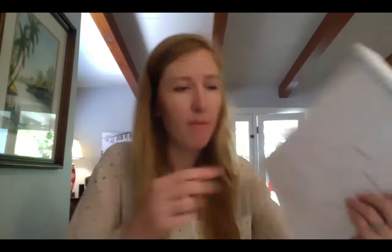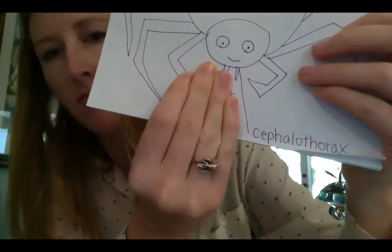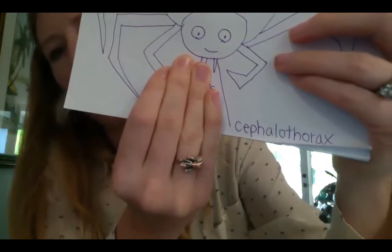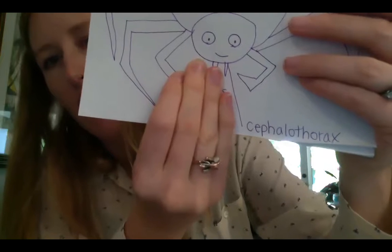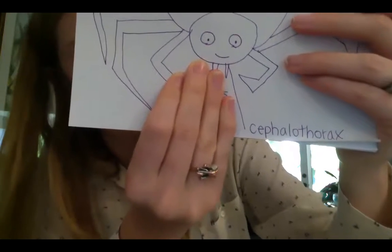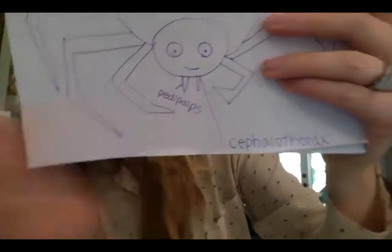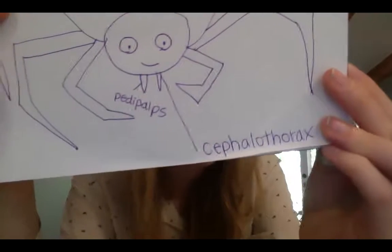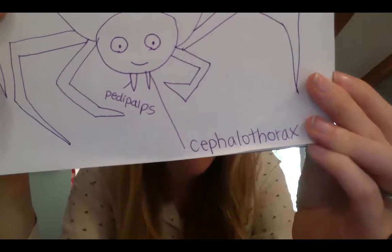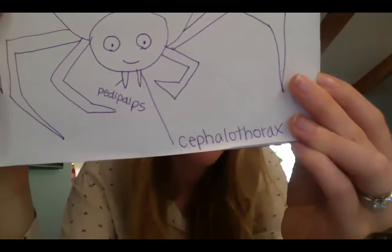And then you will also need to label the abdomen, which is the back part of the body. You have those written in your journal — you can copy from there. The head is the cephalothorax. Remember, there are usually six to eight eyes. And then there are what almost look like fangs coming out of the cephalothorax — those are called the pedipalps. The pedipalps can look and even act like extra arms on some spiders, and they are usually used to hold insects for them to eat.